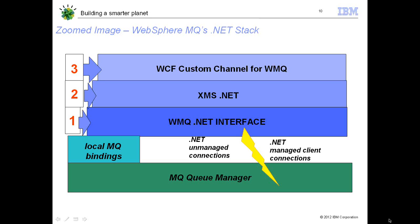Now we have two kinds of connections. One is unmanaged connections, where the .NET classes delegate calls to the C-client. And we have another mode of connection, which is managed client, where the entire MQI is implemented in C-Sharp and executes completely under the control of, or under the scope of, CLR. This gives you all the advantages — it allows you to fully leverage the advantages that CLR provides, such as security, exception handling, memory management, and so on.